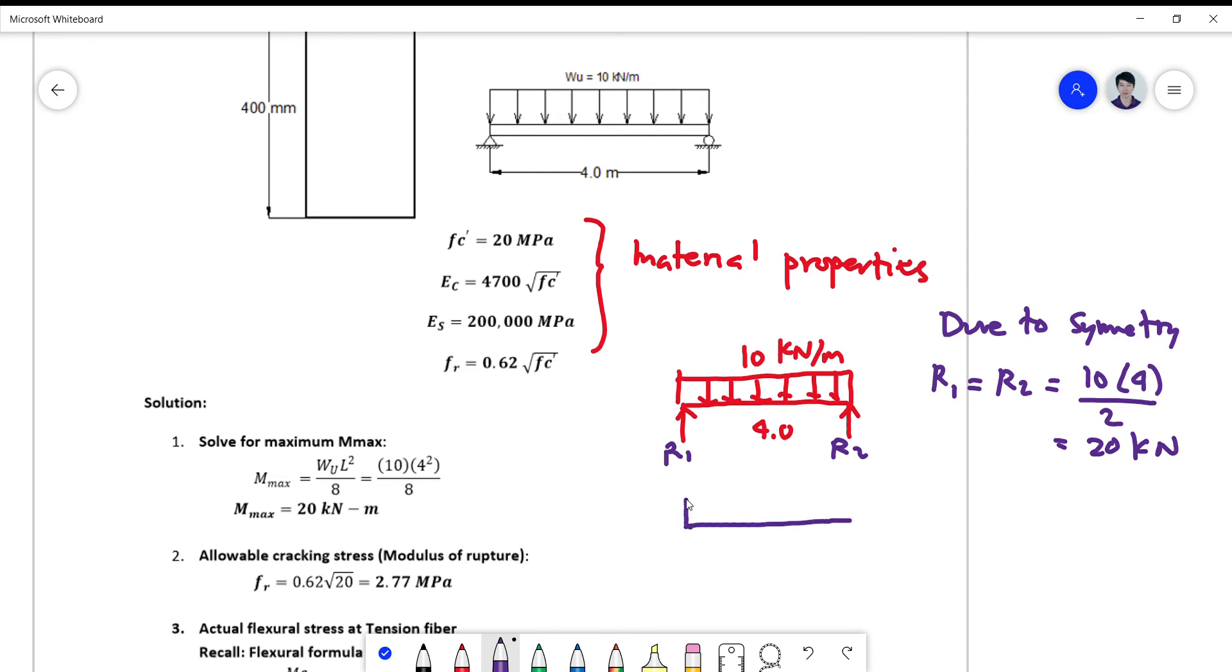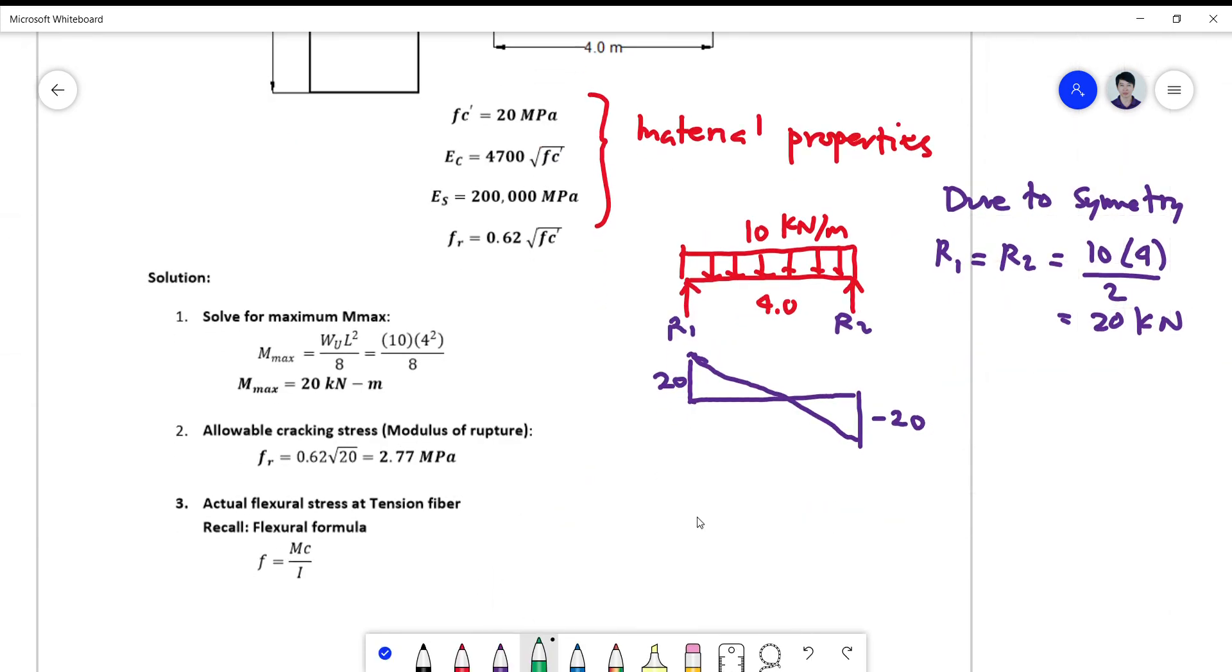So if I draw now this shear diagram, I go up 20, then this is a uniform load. This is a negatively directed load, so it must be downward uniform slope. Then you go up, so this is 20, negative 20. And your final moment diagram now becomes, since this is at the middle, the shear area here exactly the moment there. Since this is a first degree curve, this must be parabolic curve.